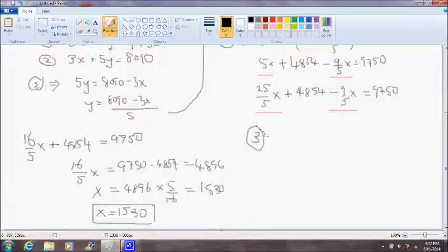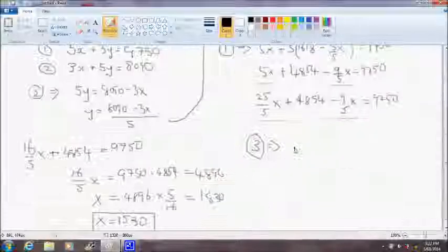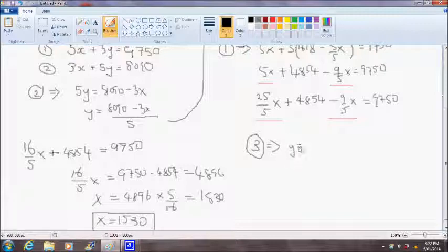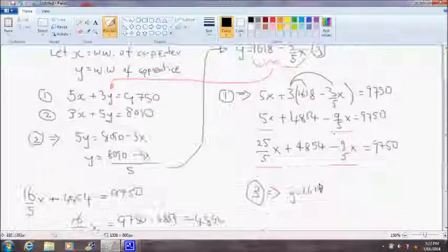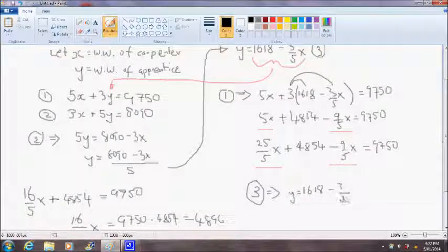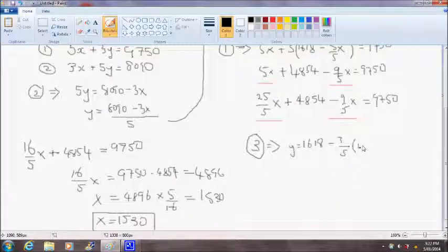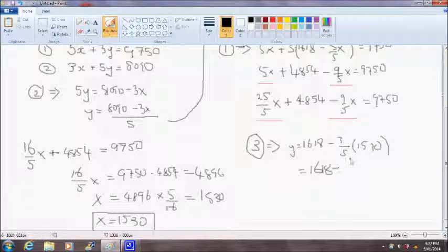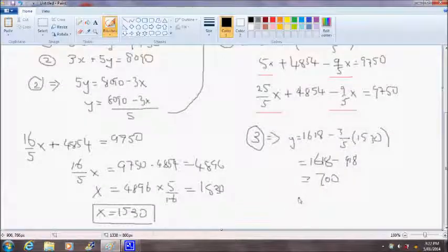So equation 3 implies that y is equal to 1618 minus 3/5 of 1530. And this is equal to 1618 minus 918, and this will of course give us the answer of 700. So therefore the weekly wages of an apprentice is $700.